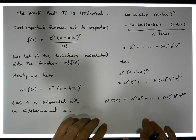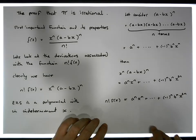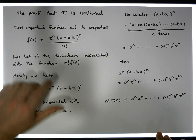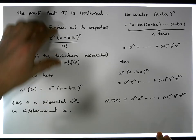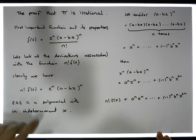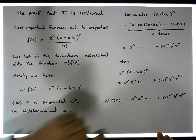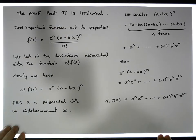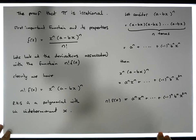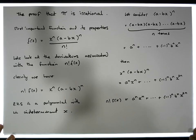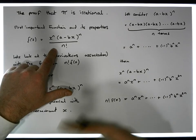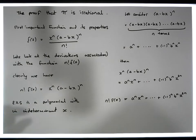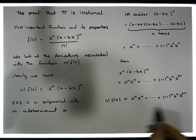Every time I've seen this particular proof, the question I've always asked is: where did this function come from? This function is going to be so important in relation to proving that pi is irrational. I'm going to ask you to take a leap of faith here and let's look at this function and its characteristics.